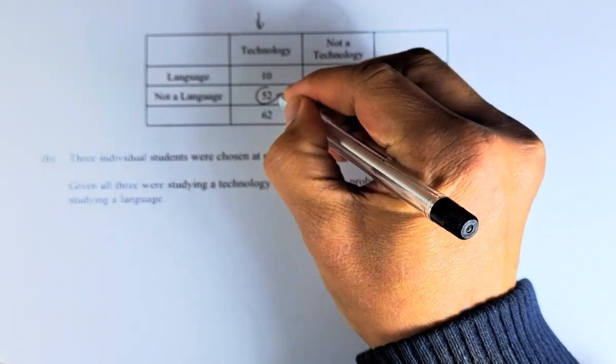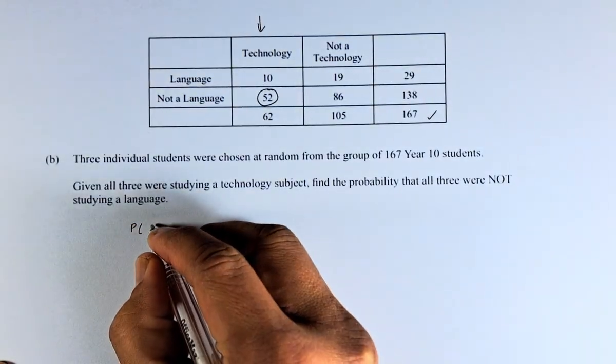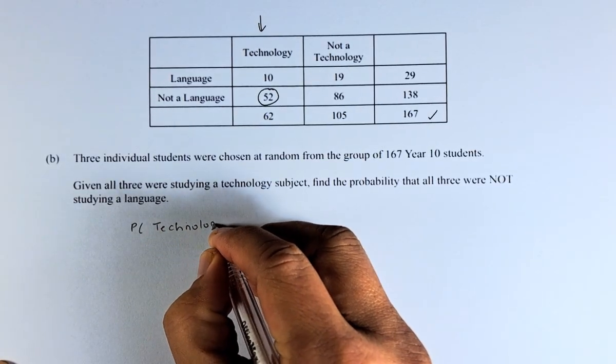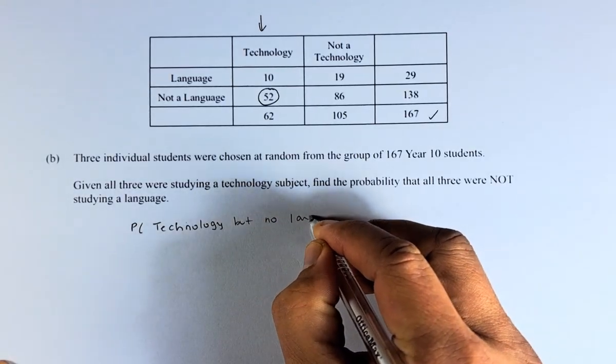Not a language is going to be 52. So the probability of studying a technology but no language is